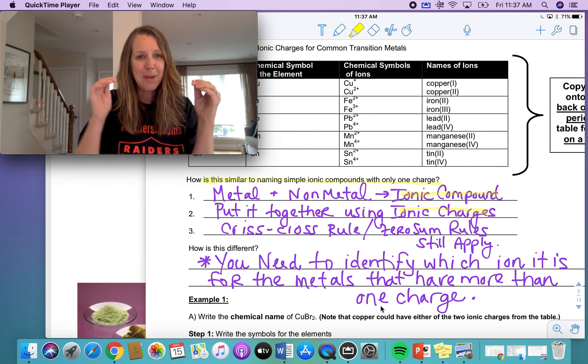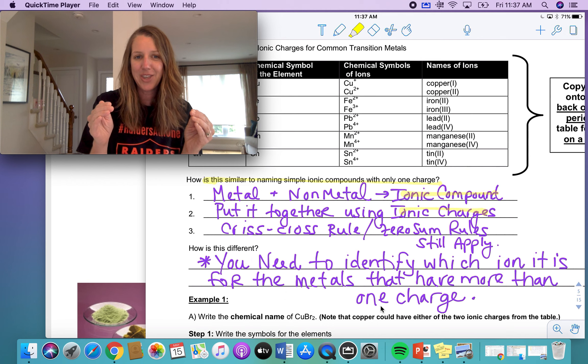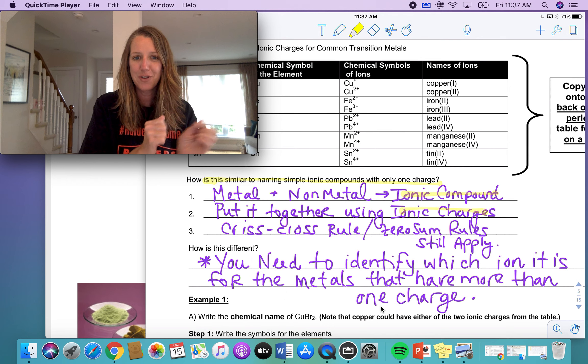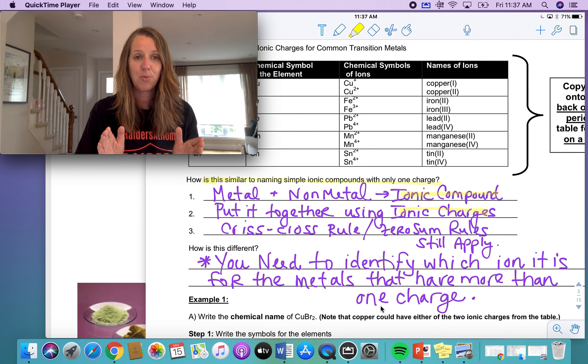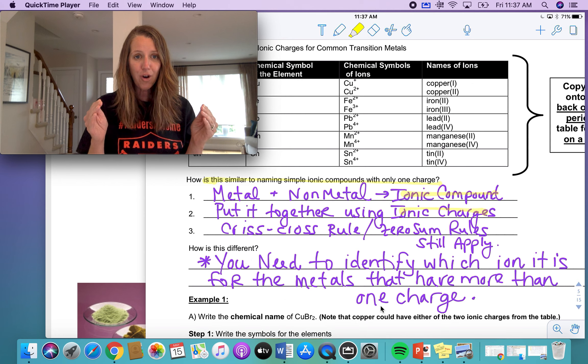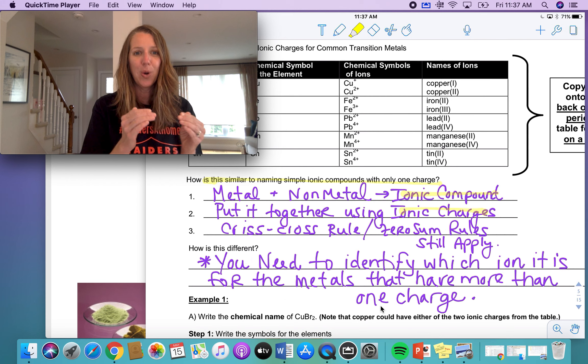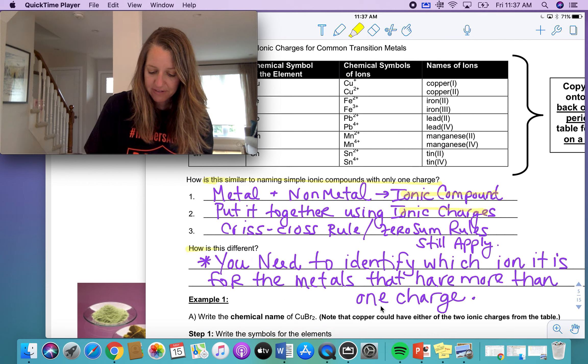You can't use the group number because these are the ones all in between. The third thing that makes them similar is you still use the crisscross rule. You still use the zero sum rule. You still have to make a compound where the overall charge is zero. How do you put them together? What ratio do they come in? How is it different?